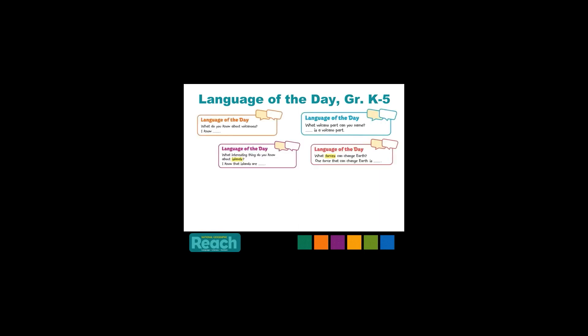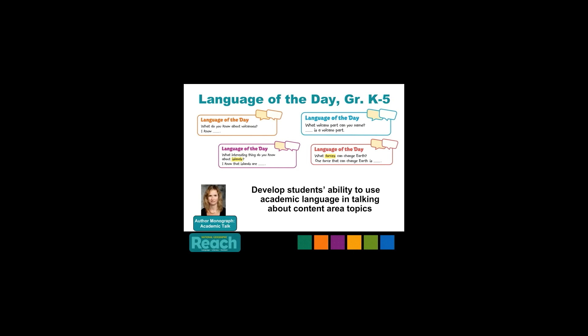In Reach every day, across all grade levels K through 5, we will begin with the language of the day. These examples from the grade 3 unit are all science or social studies based, linked to the big question, and increase with more detail and more complex language frames — with the key goal to develop students' ability to use academic language when talking about content area topics. With Reach, students are engaged in academic talk each and every day. To learn more about the importance of academic talk, read Dr. Noni Lassot's author monograph titled Turn Up the Volume on Academic Talk.